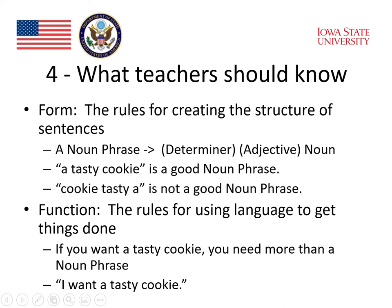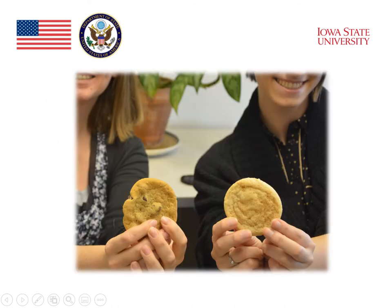Function, in contrast, refers to the rules for using language to get things done. If you want a tasty cookie, you need more than a noun phrase — you need to be able to say 'I want a tasty cookie.' You also need to say it at the right time, in the right place, to the right person, in order to make the function of that sentence actually get you a cookie. That's the function of language: its ability to get things done.